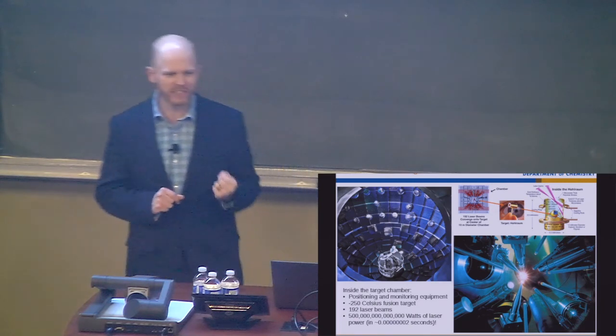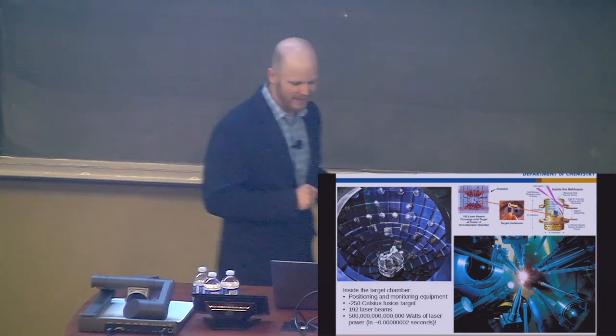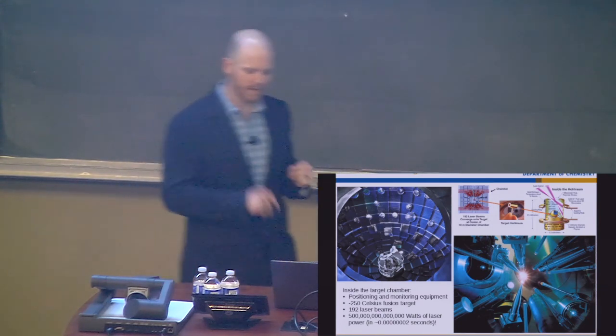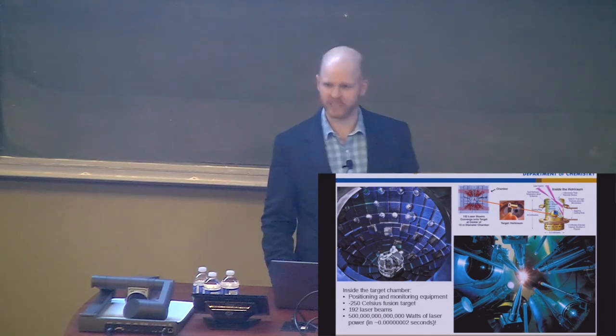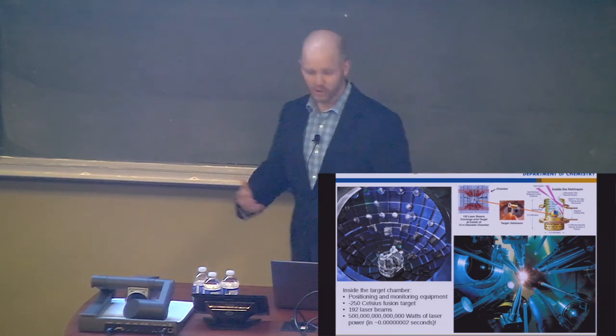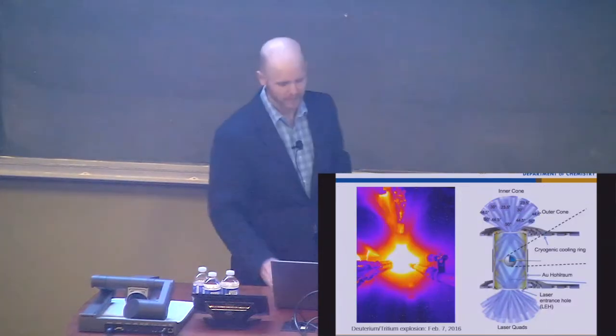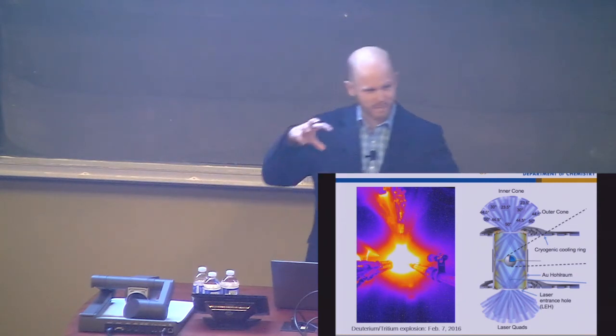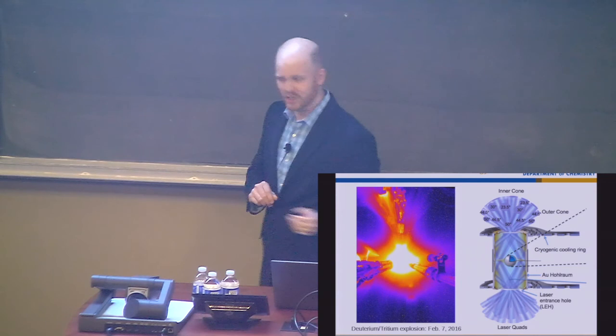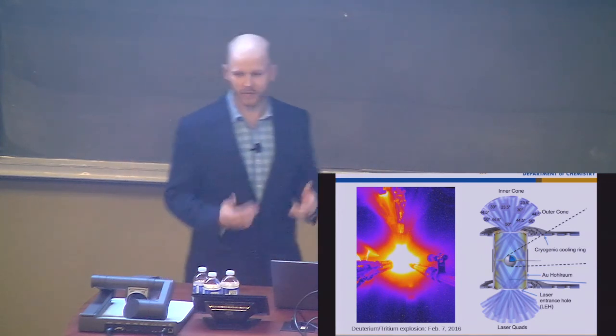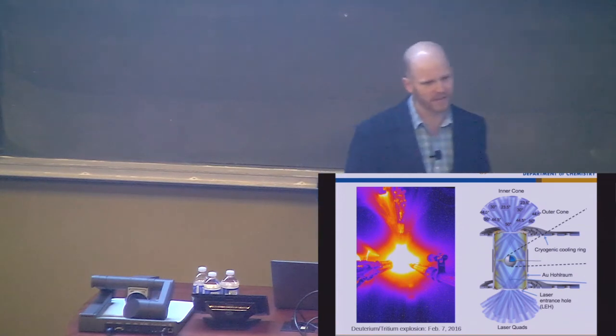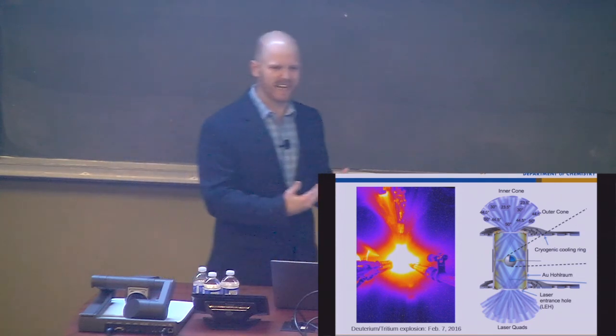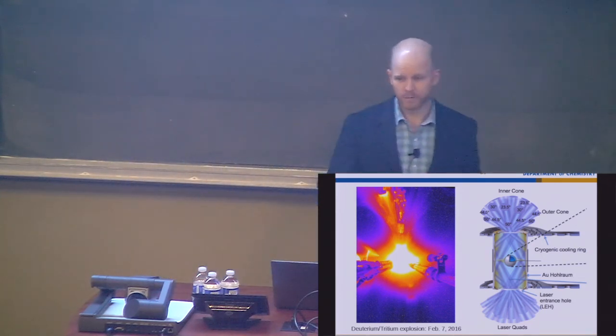These 192 laser beams hit this target that's held at a temperature of about minus 250 degrees Celsius, and they deliver 500 trillion watts of power over a time period of 20 billionths of a second in an effort to create an X-ray plasma that sustains nuclear fusion, the same kind of fuel process that powers the star at the middle of our solar system. So this is an image, a kind of zoomed-in view at the target that they shoot all of these lasers at. All those beams kind of converge into one part, and the image on the left is an actual deuterium-tritium explosion that they generated on February 7th of last year.